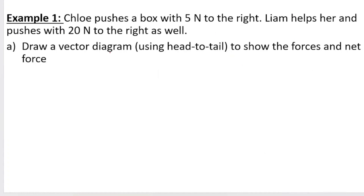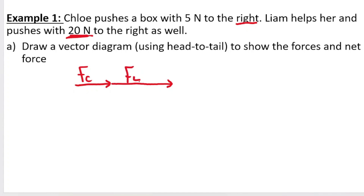Let's look at another example: Chloe pushes a box with 5 Newton to the right, and Liam helps by pushing with 20 Newton to the right as well. We draw Chloe's force vector (Fc) pointing right, then Liam's force vector starts at the head of Chloe's, also pointing right — drawn longer because Liam's magnitude is greater. The net force goes from the tail of the first to the head of the last. Head to tail.